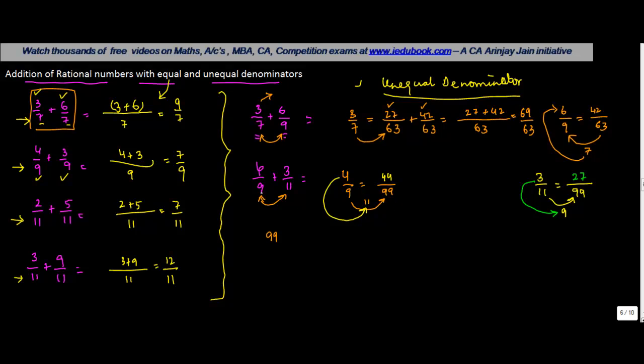Net net, 4/9 can be written as 44/99 + 27/99, which equals 3/11. Now because both of them have a common denominator, we take the denominator as 99, and the numerator becomes the sum of these two numbers: 44 + 27 = 71/99.